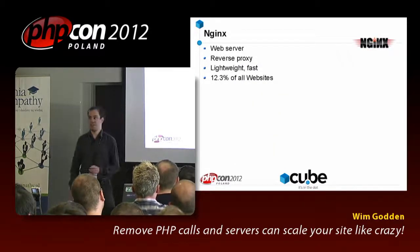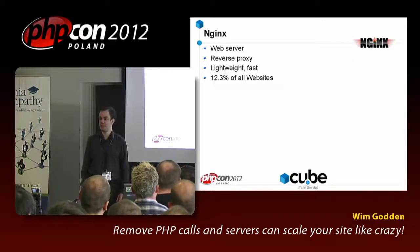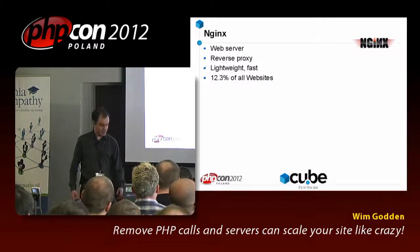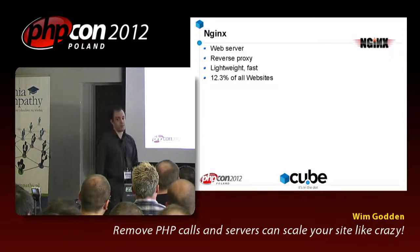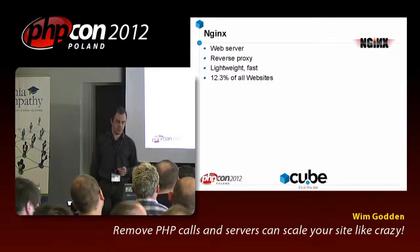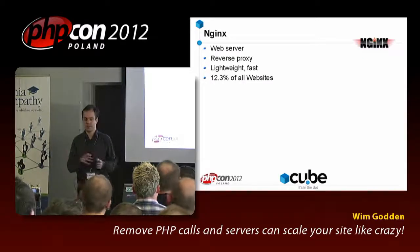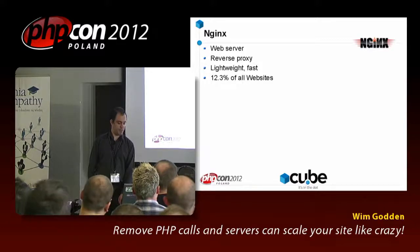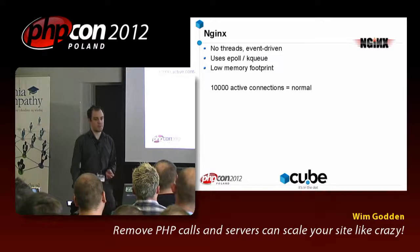Luckily, I discovered another very nice tool: Nginx. It was developed originally by a Russian to serve images. It's a web server and also a reverse proxy, like Varnish, and it is unbelievably fast. It runs today on 12.3% of all websites — it keeps rising — and is the second largest web server after Apache, having just passed Internet Information Server. It doesn't use threads, so it doesn't copy its entire codebase for every new connection like Apache does. It uses ePoll KQ and doesn't use a lot of memory. For example, 10,000 simultaneous connections to Nginx uses only 2.5 megabytes of memory.